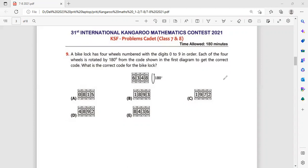Let's read the question. A bike lock has four wheels numbered with the digits 0 to 9 in order. Each of the four wheels is rotated by 180 degrees from the code shown in the first diagram to get the correct code. What is the correct code for the bike lock?